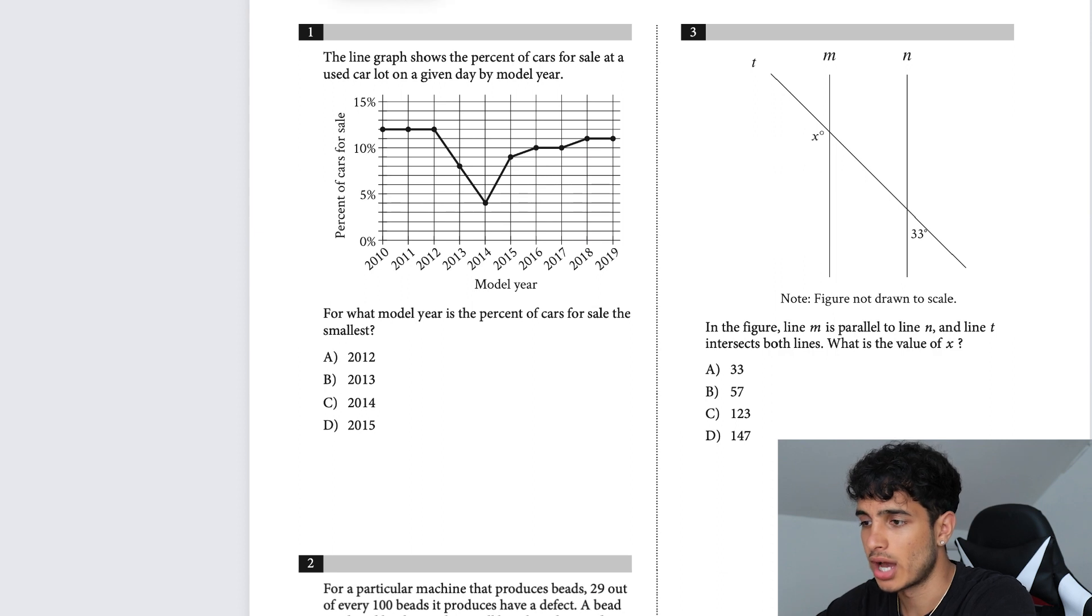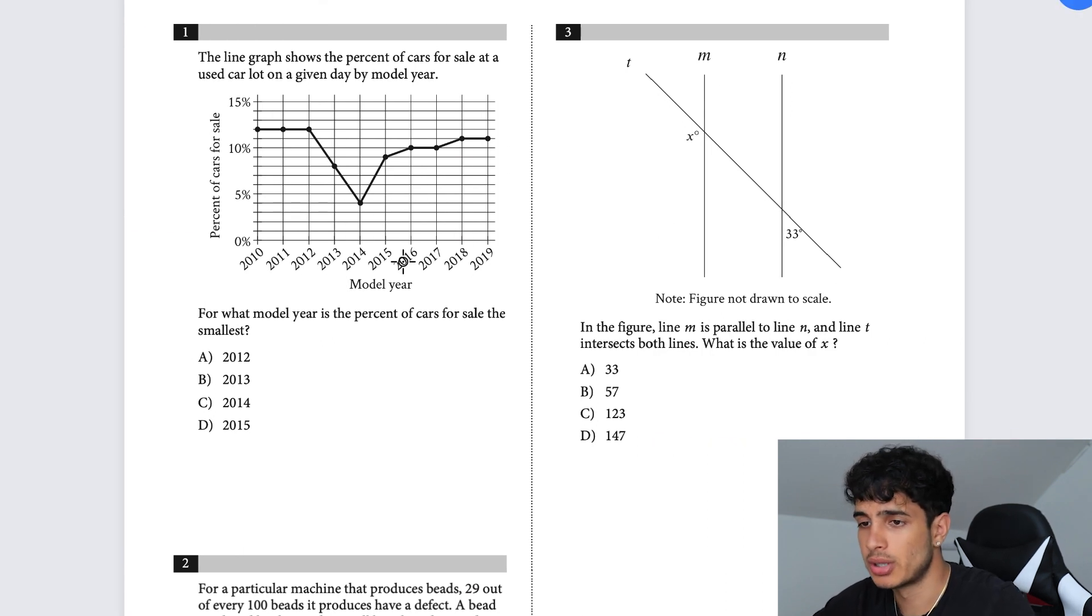Number one: The line graph shows percent of cars for sale at a used car lot on a given day by model year. For what model year is the percent of cars for sale the smallest? You're just looking for the minimum point in the graph, which is right here. That is 2014.